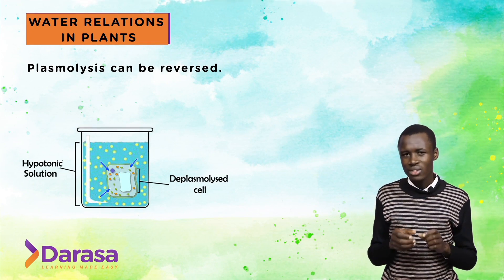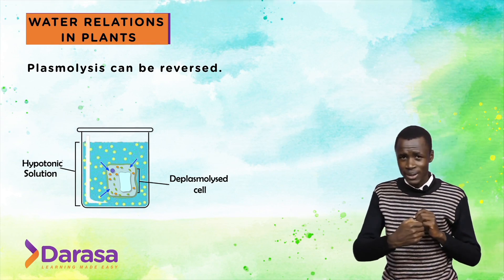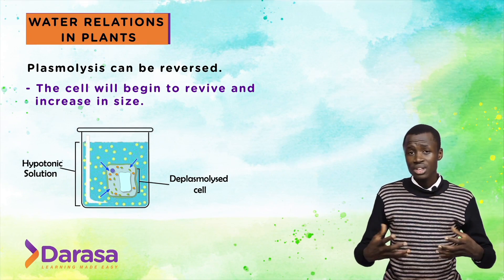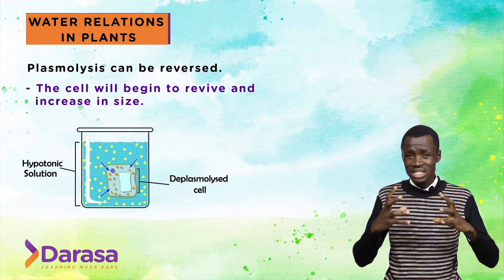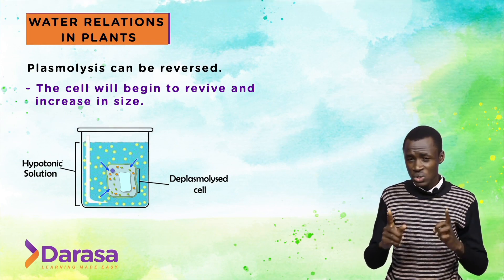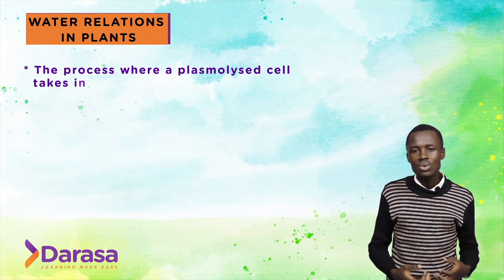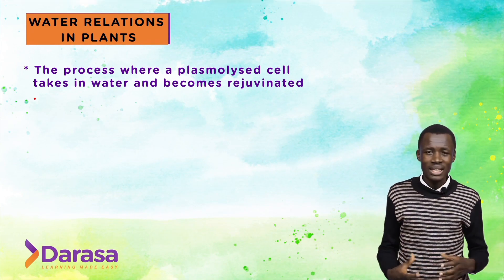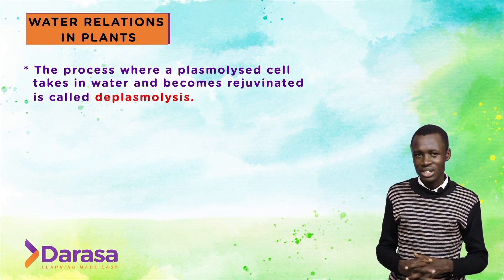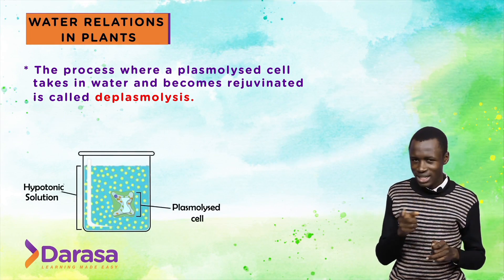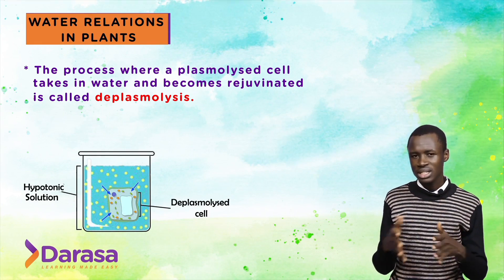Water is drawn from the hypotonic solution into the cell, so the cell begins to revive — it increases in size and becomes turgid. It grows bigger and bigger, but please note it will not burst. The entire process whereby a plasmolysed cell takes in water and becomes turgid again — it rejuvenates — is called deplasmolysis. That is when a plasmolysed plant cell placed in distilled water draws water and becomes turgid.